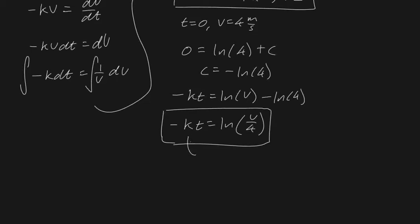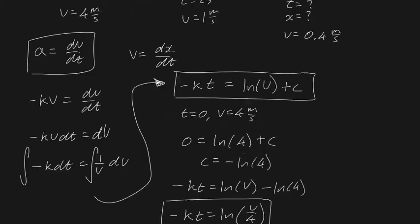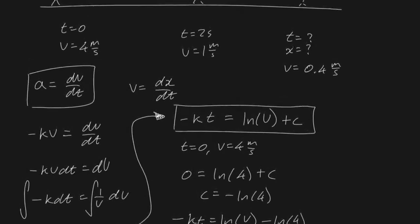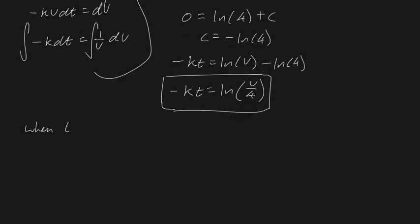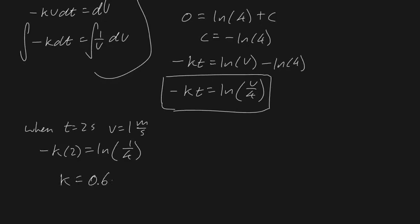We still have the proportionality constant k to find, so we use the second boundary condition: t = 2 s, v = 1 m/s. Plugging in: minus k × 2 = ln(1/4). Solving for k gives k = 0.693.